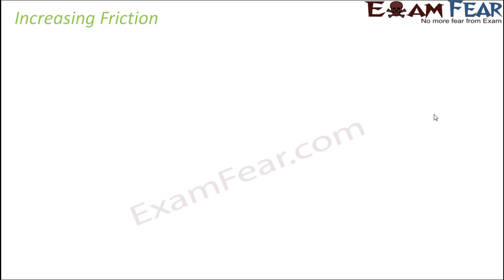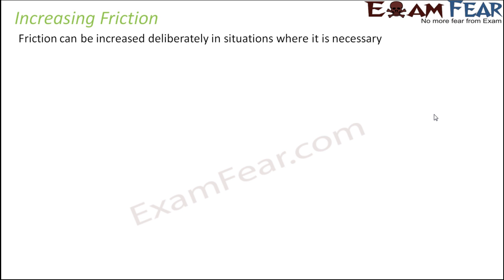In which situation will we want to increase the friction? Where friction is desirable, of course. Friction can be increased deliberately in situations where it is necessary — wherever it is important, wherever it is good, wherever it is desirable, we will try to increase friction. Now, how can we increase friction? Friction is because of the nature of the surface. If surfaces are pressed hard, friction will increase. If the surface is rough, friction will increase. So one very common way to increase friction is to make the surface rough.